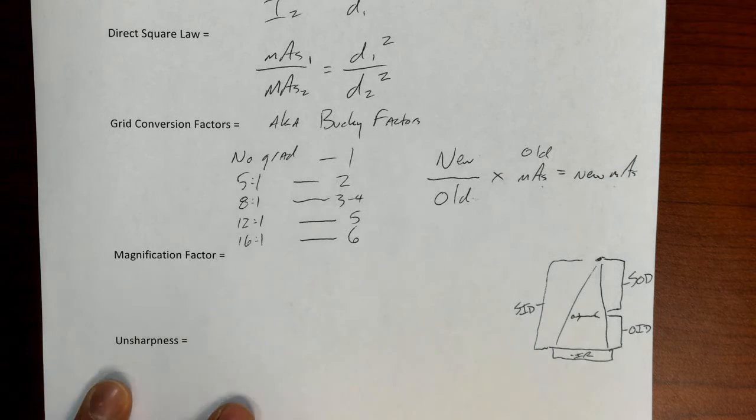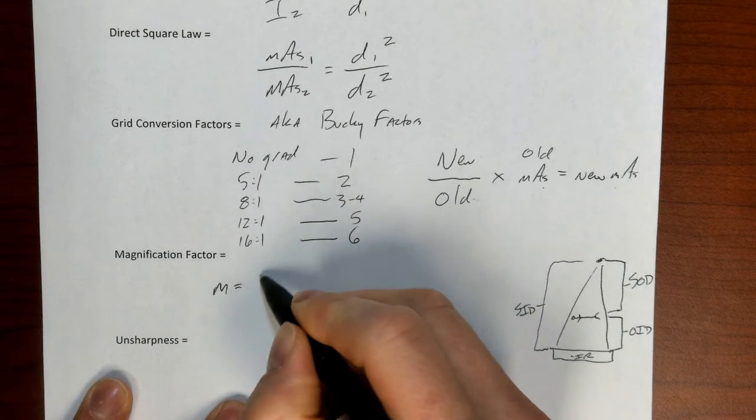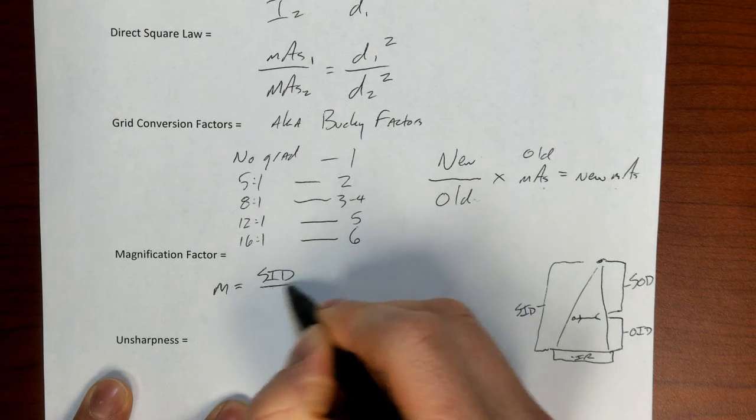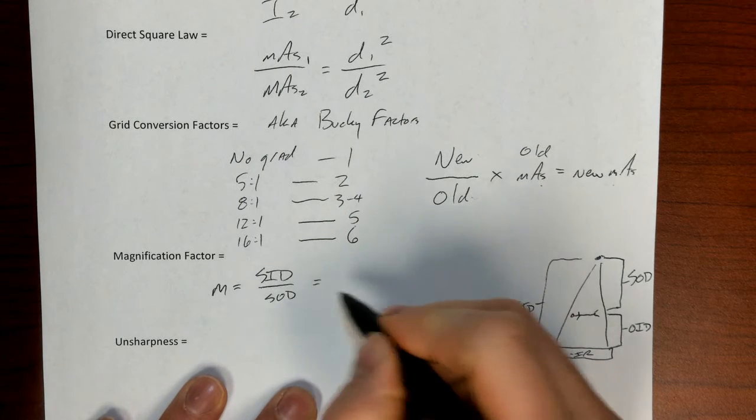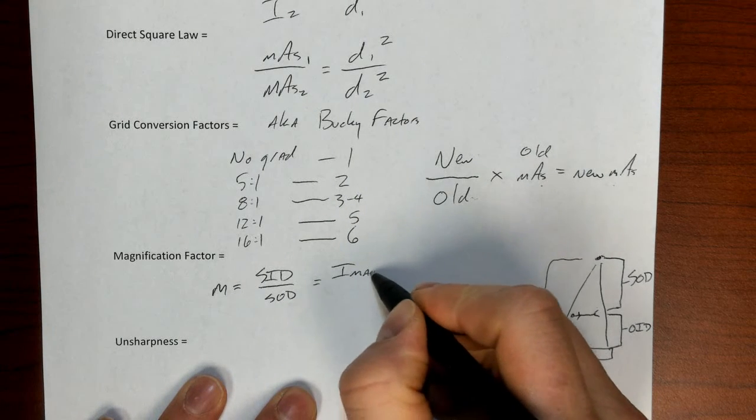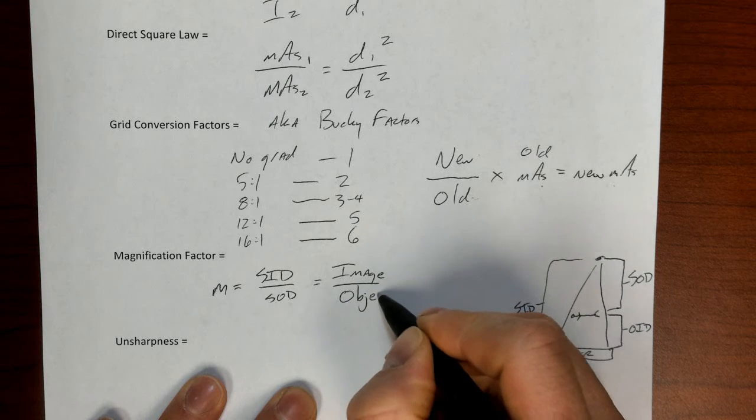They will influence things like both magnification and unsharpness. So the first one that we'll look at will be magnification, which I just remember is SID over SOD. SID over SOD. If I want to figure out what an image size is, I know that it will always be larger than the object size.